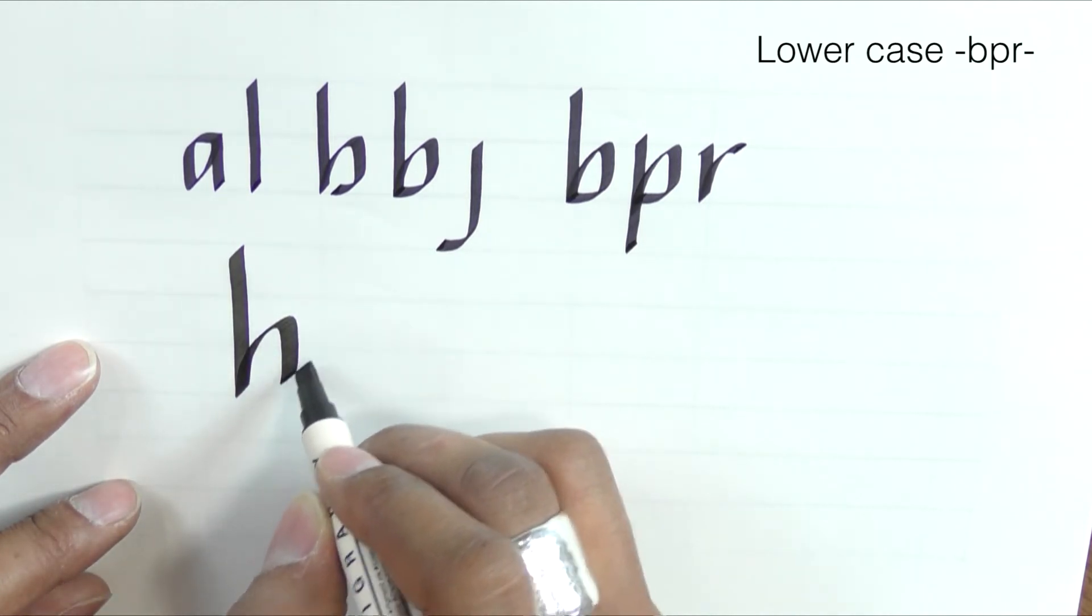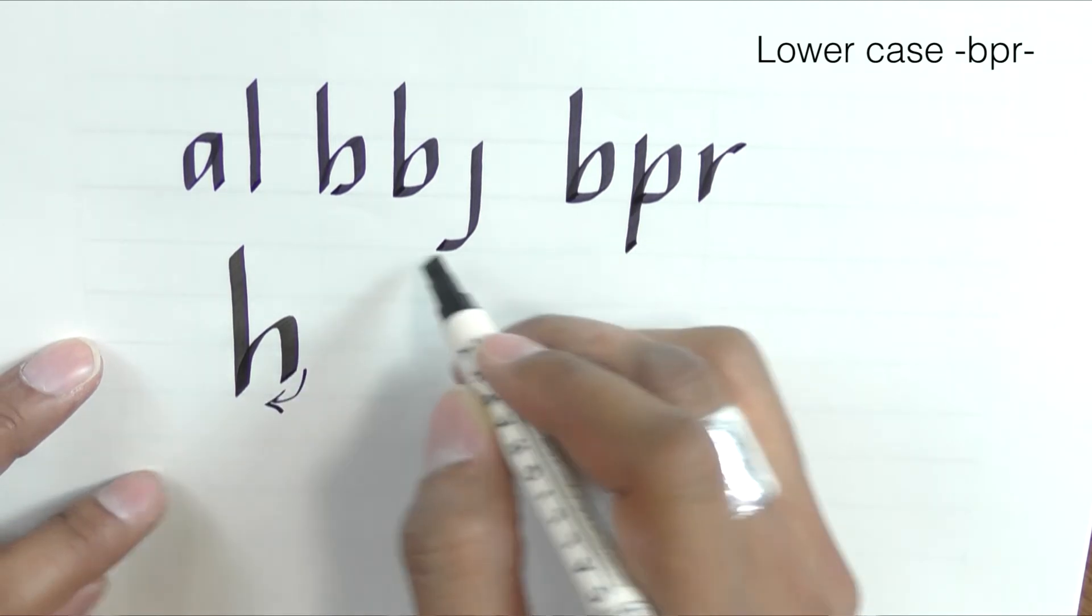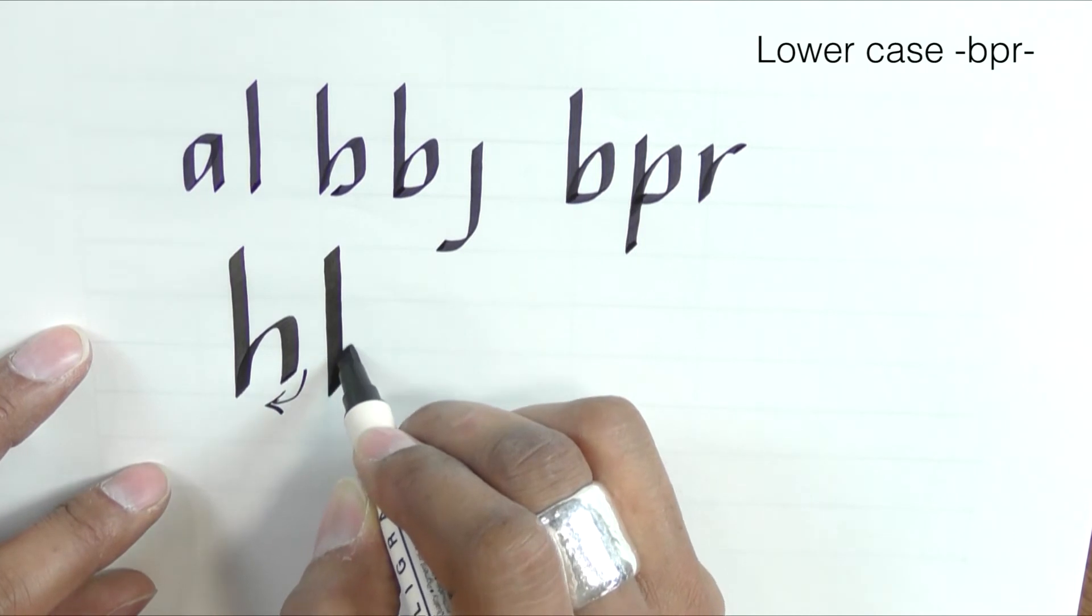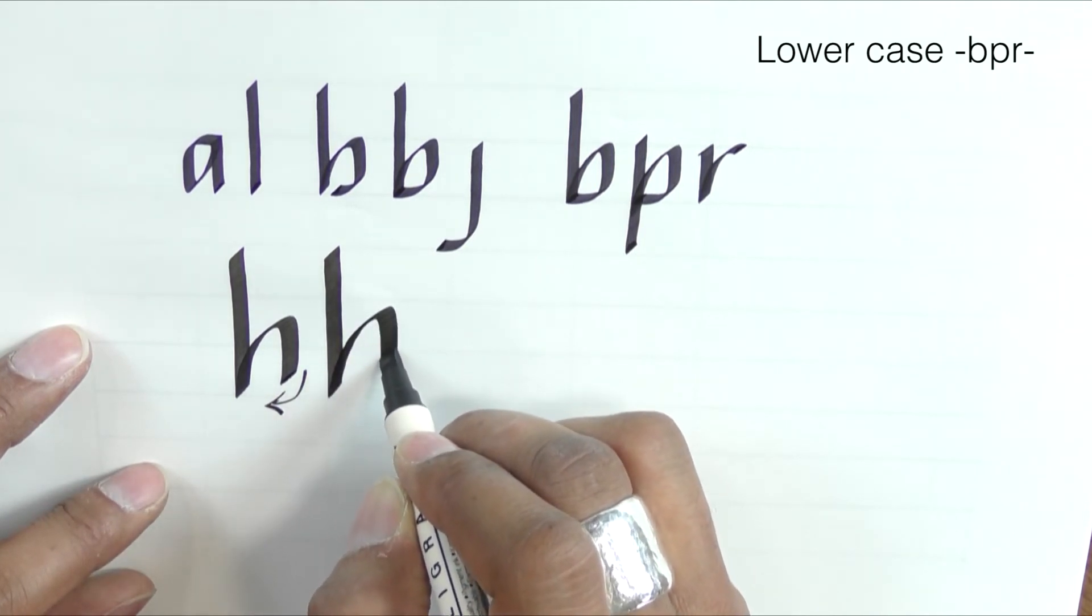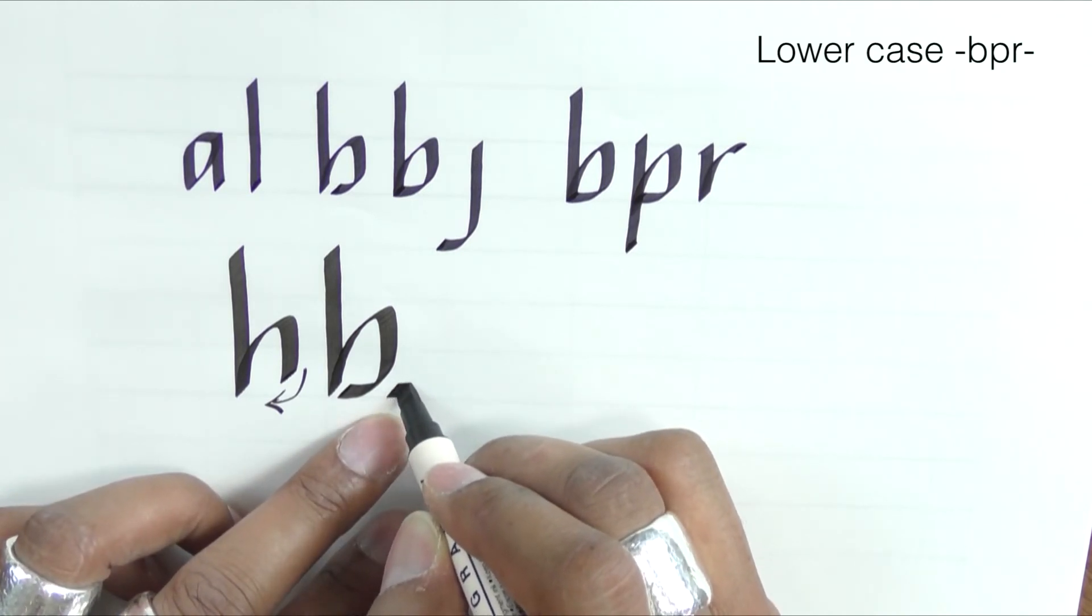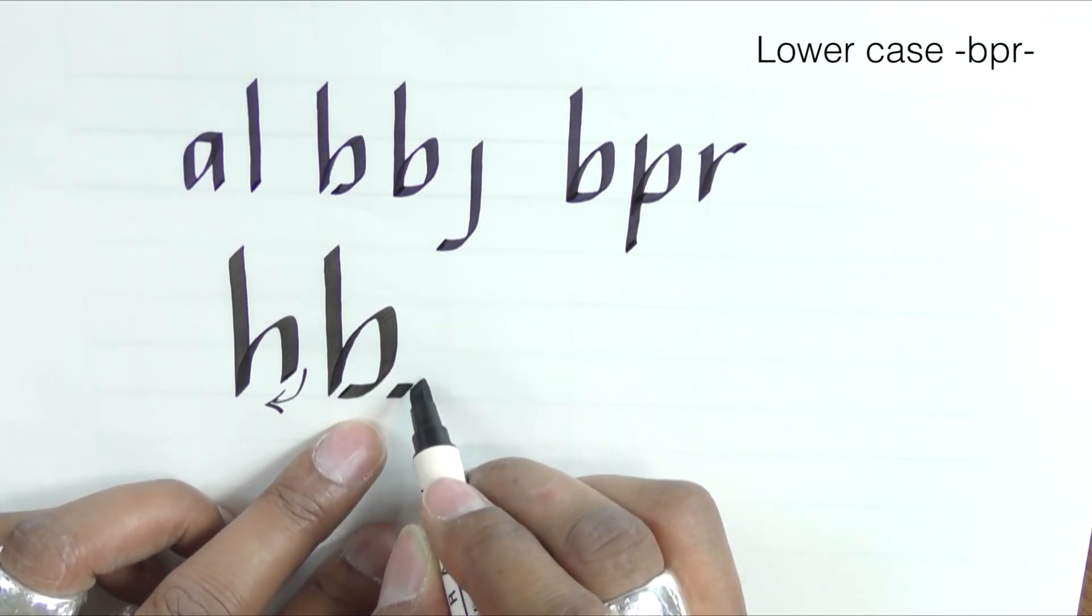To see where the stroke is starting to get thin because you're going to push back in on yourself. And that is the height of the nib.